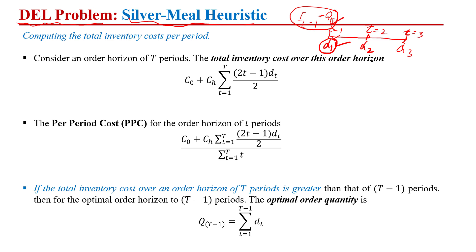In the Silver Meal heuristic, we are trying to find out the total cost per period. The total inventory cost per period is basically the ordering cost plus the total holding cost. This uses the per unit holding cost multiplied by the average inventory.